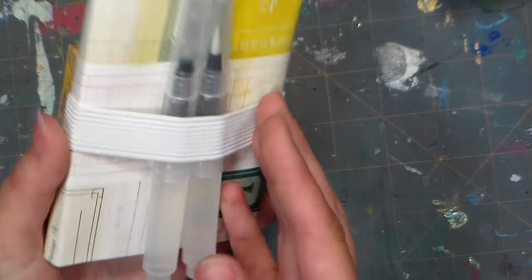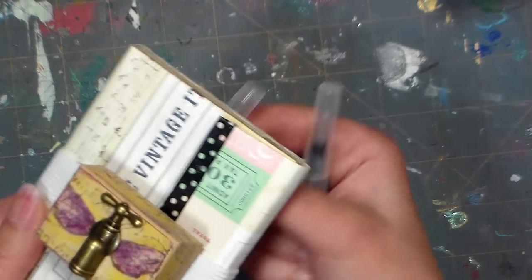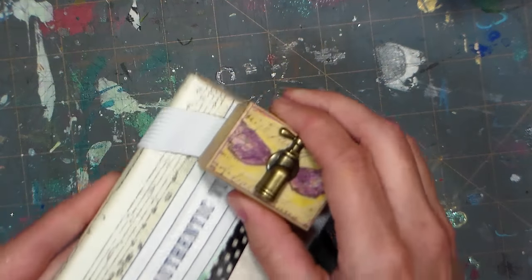Hi there, Lindsay here, the Frugal Crafter. Today I'm going to show you how you can make this teeny tiny watercolor palette bracelet and tiny little block of paper that you can take on all of your crafty adventures this summer.